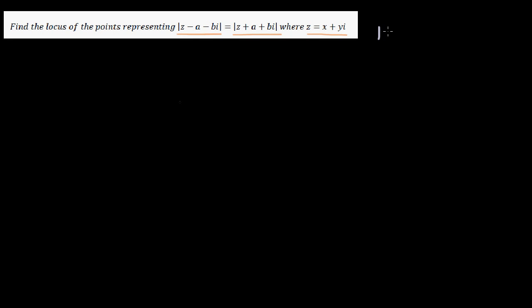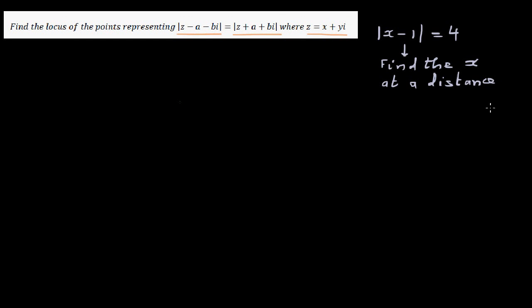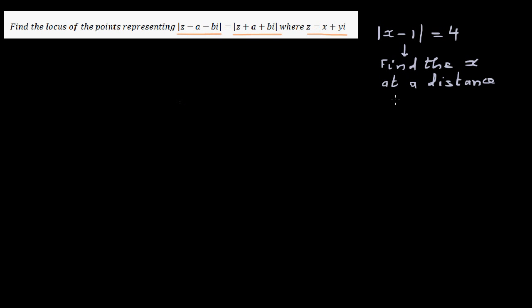So what does this mean: |x - 1| = 4? Basically, in words, this question is asking: find the x's at a distance of 4 from 1. This is what it means in simple language — find the x or x's at a distance of 4 from 1.